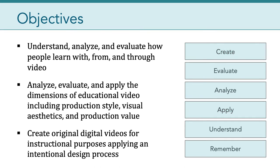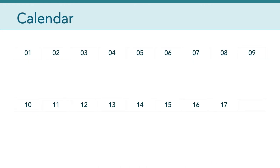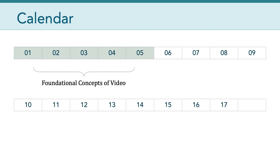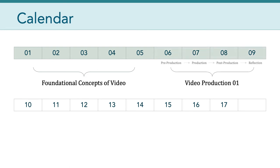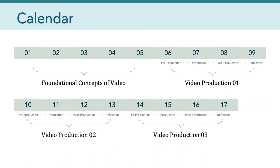Now, to do all of this, things are going to be pretty hands-on, which we can see if we look at the course schedule. The semester is roughly divided into quarters. We'll spend the first five weeks exploring some of the fundamental concepts of producing digital video. Starting around week six, we'll begin our first video production projects. These video projects will follow a four-week cycle, from planning and pre-production, to production, to post-production, and then finally, reflection and feedback. From there, we'll spend the rest of the time completing two more video production projects.